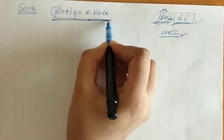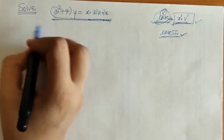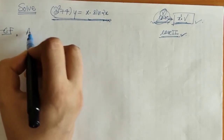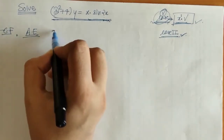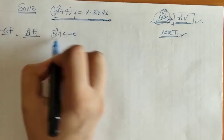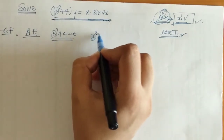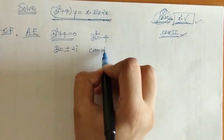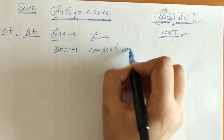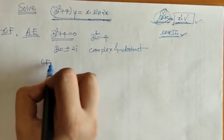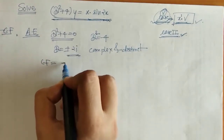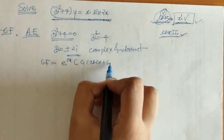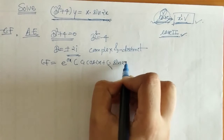First we will find CF. For CF we need the auxiliary equation. The roots are complex and distinct, so what is CF? The CF is c1·cos(2x) + c2·sin(2x).